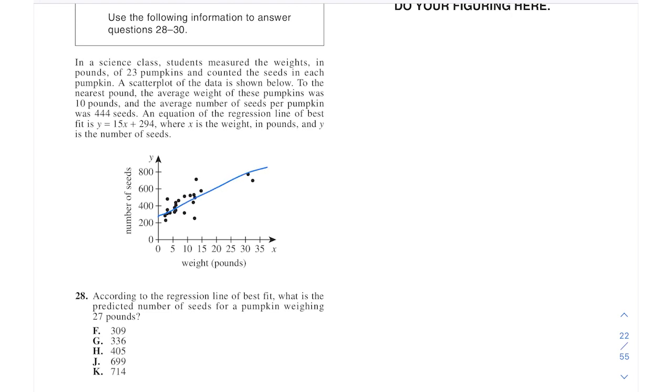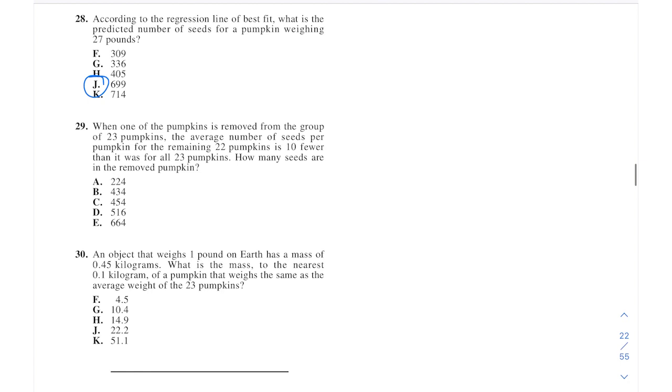Regression line and line of best fit just means that it's the best approximation or representation of the data in the scatterplot shown. Here they give you an equation of that so you know exact values for slope and y-intercept. So let's see. Predicted number of seeds for a pumpkin weighing 27 pounds. So you're doing 15 times 27 using that equation and adding on that intercept. And that's going to give you, it should be right around 700. Yep, 699. And that one I did use calculator for just as an FYI. Doing mental math is great if it saves time, but if they're giving you exact numbers like you see in the answer choices here, then you want to make sure you're doing an exact calculation.